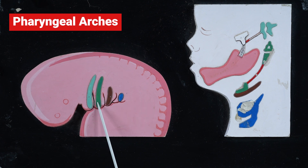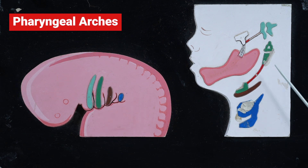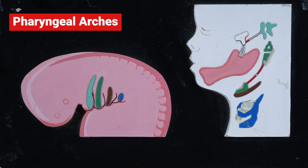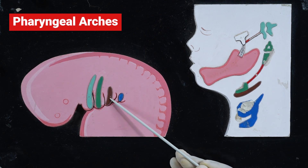The muscles derived from the second pharyngeal arch include all facial muscles, stylohyoid, the posterior belly of digastric, and also the stapedius, one of the smallest muscles in the body, which helps in the stapedial reflex. All these muscles are innervated by the facial nerve. The third arch gives rise to only one muscle, stylopharyngeus, innervated by the glossopharyngeal nerve.